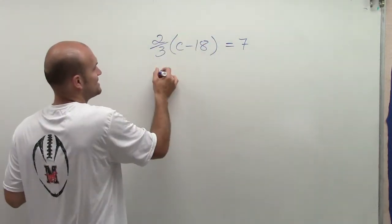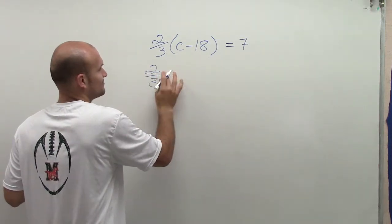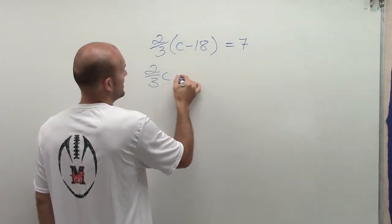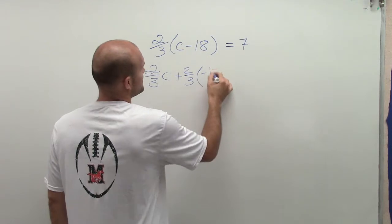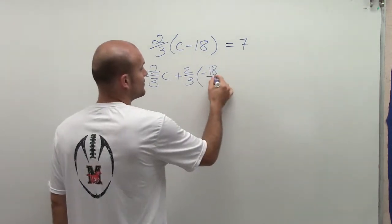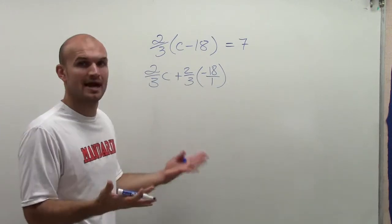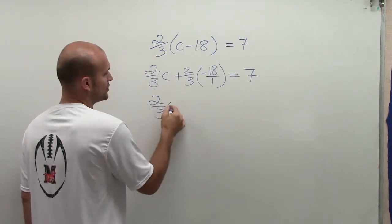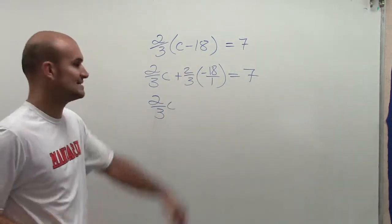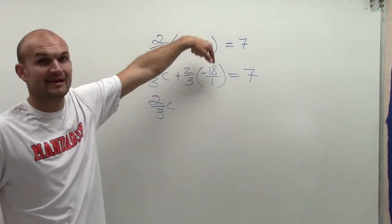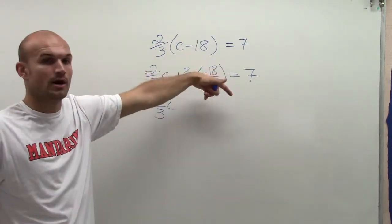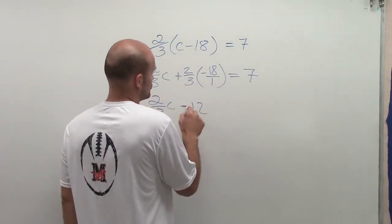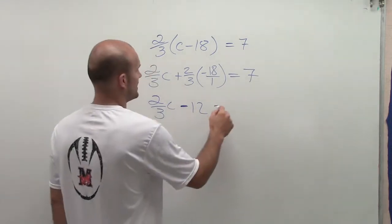2/3 times c is 2/3 c, and then 2/3 times negative 18. Let's just write it out. I have a positive 2/3 times a negative 18. Negative 18, we can rewrite as negative 18 over 1, so it's written in fractional form, equals 7. 2/3 times c is just 2/3 c. 2/3 times negative 18, you just multiply across. 2 times negative 18 is negative 36, 3 times 1 is 3. Negative 36 divided by 3 gives me negative 12 equals 7.